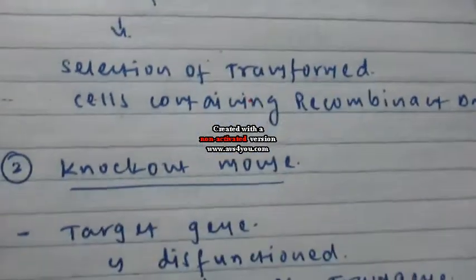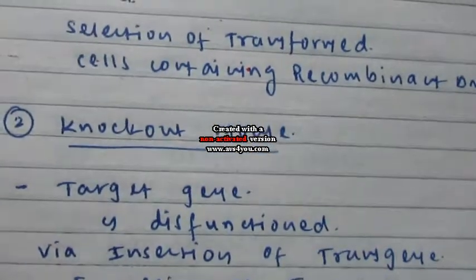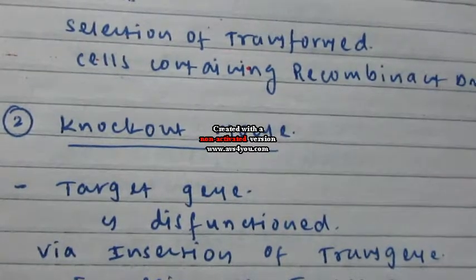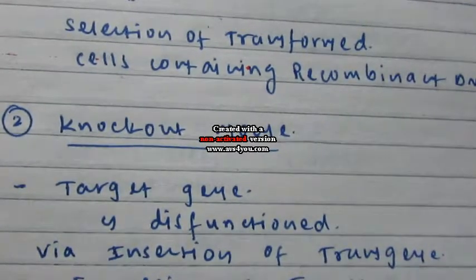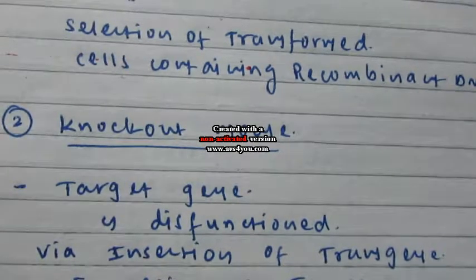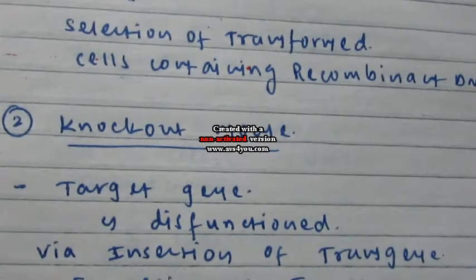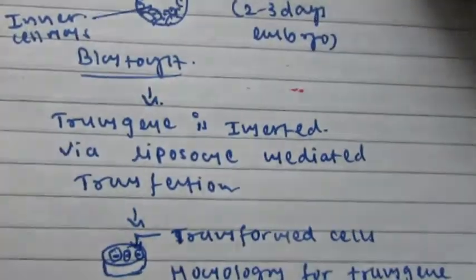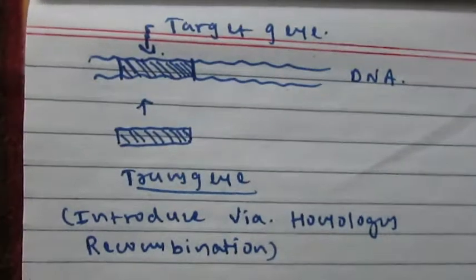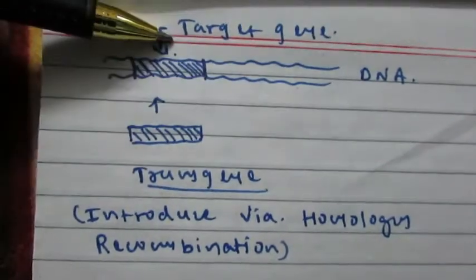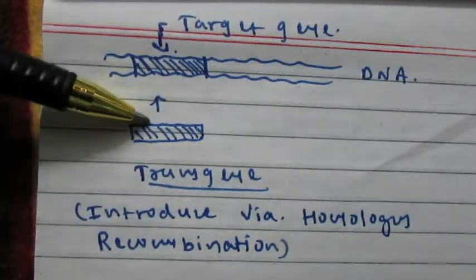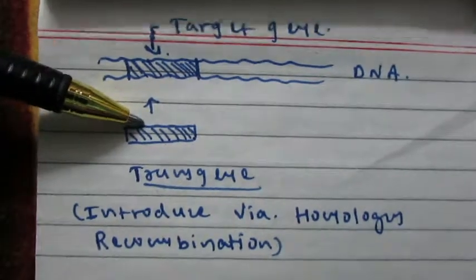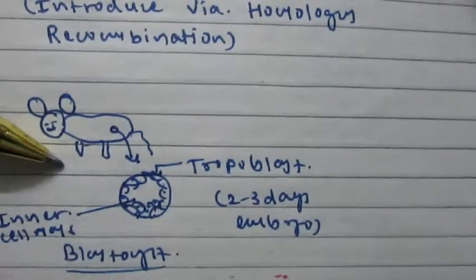The second one is knockout mouse. In the knockout mouse, the target gene is dysfunctioned via the insertion of a transgene. So if a transgene is inserted, the basic function of the target gene is totally lost and expression of the target gene is stopped. In the knockout mouse, the target gene in the DNA is replaced via homologous recombination by the transgene.